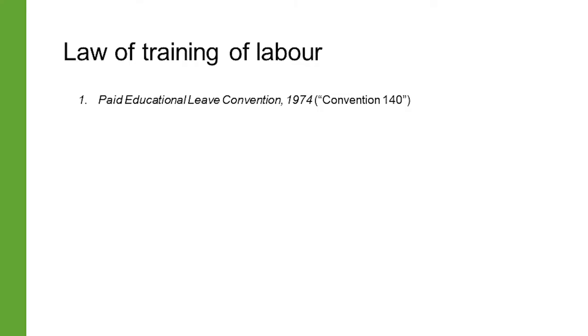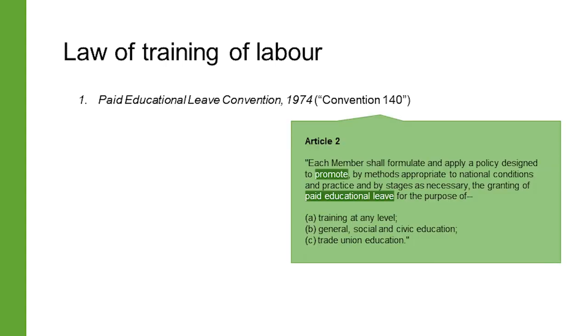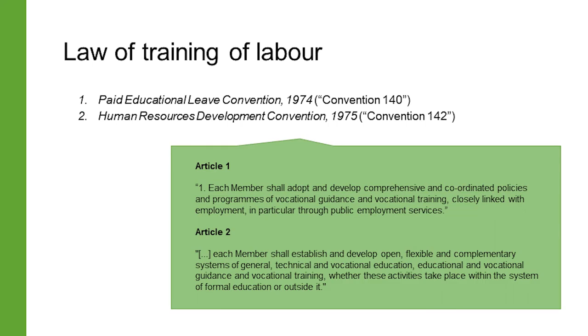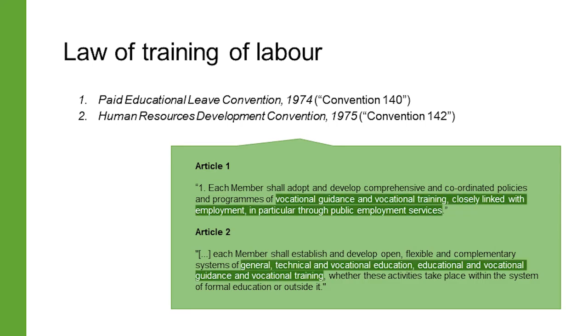The training of labour is the final aspect we will explore in this video. Education and training are key if people are to be employable and thereby gain access to decent work and thus escape poverty. ILO conventions encourage states to adopt sound human resources practices and training policies. The Paid Educational Leave Convention of 1974 requires ratifying states to promote the granting of paid educational leave for the purpose of training at any level, including general, social and civic education, and trade union education. The Human Resources Development Convention of 1975, which India has ratified, requires ratifying states to develop policies and programs of vocational guidance and vocational training, closely linked with employment, in particular through public employment services.